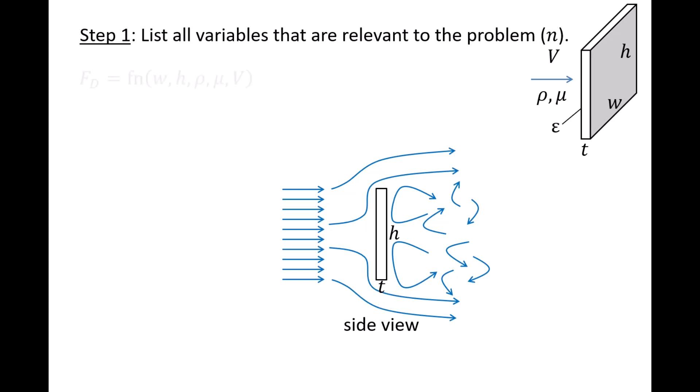We now write the functional relationship between all of the relevant variables. The drag force Fd is some unknown function of the sign's width, the sign's height, the density and absolute viscosity of the fluid, and the flow speed. The total number of variables in this problem, n, is 6. We now can determine a set of pi groups to study this problem experimentally.